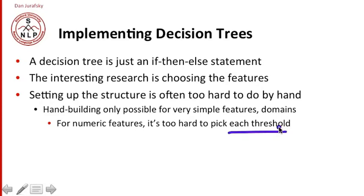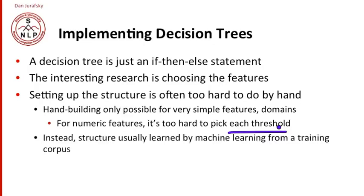I'm picking a probability as one of my features. I've got to have a question in the decision tree. Is this probability greater than some threshold theta or not? And I've got to set all those thetas. And so generally, we use machine learning that learns the structure of the tree and learns things like the threshold for each of the questions that we're asking.